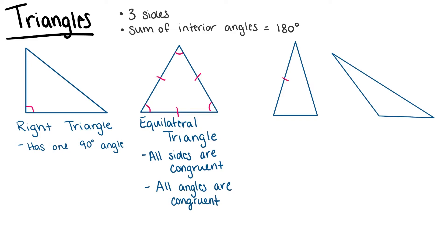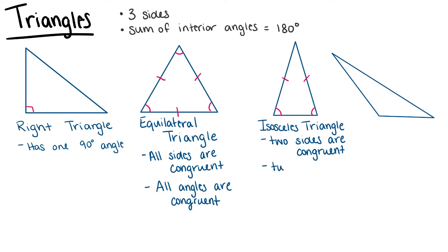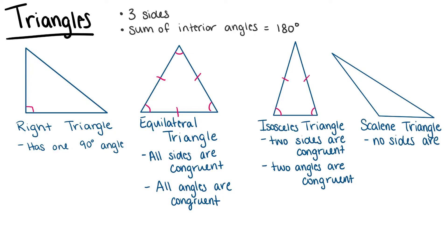Isosceles triangles, where exactly two sides are congruent and two angles are congruent. Or a scalene triangle, where no sides are congruent and no angles are congruent. These are the four types of triangles that we can classify.